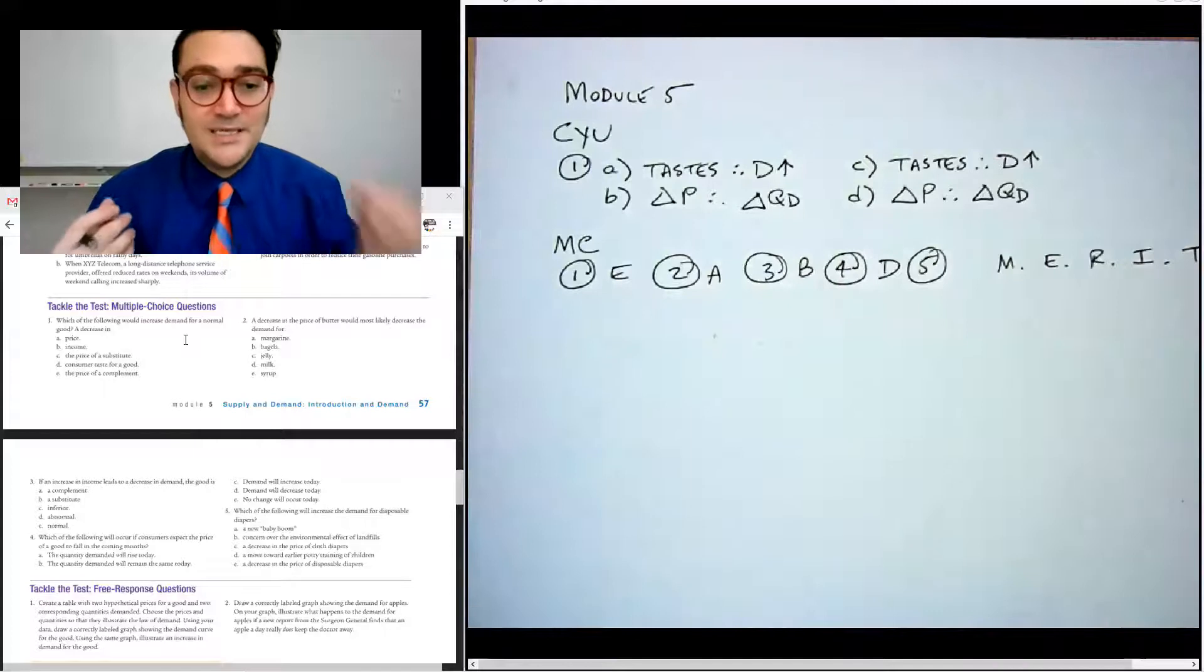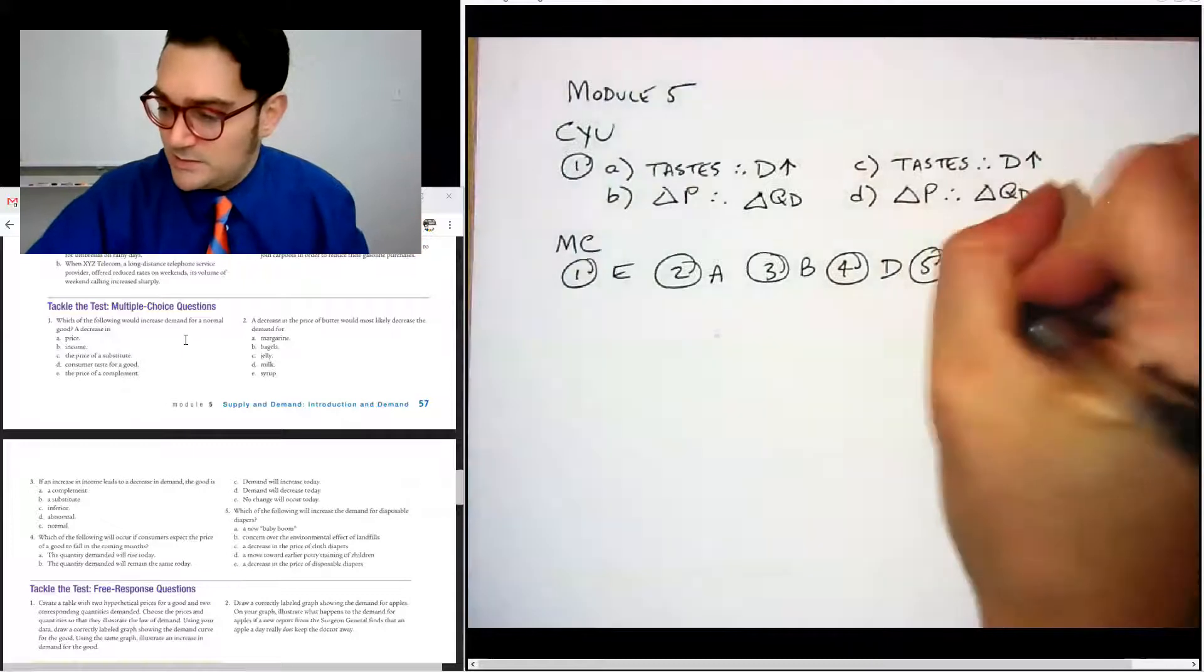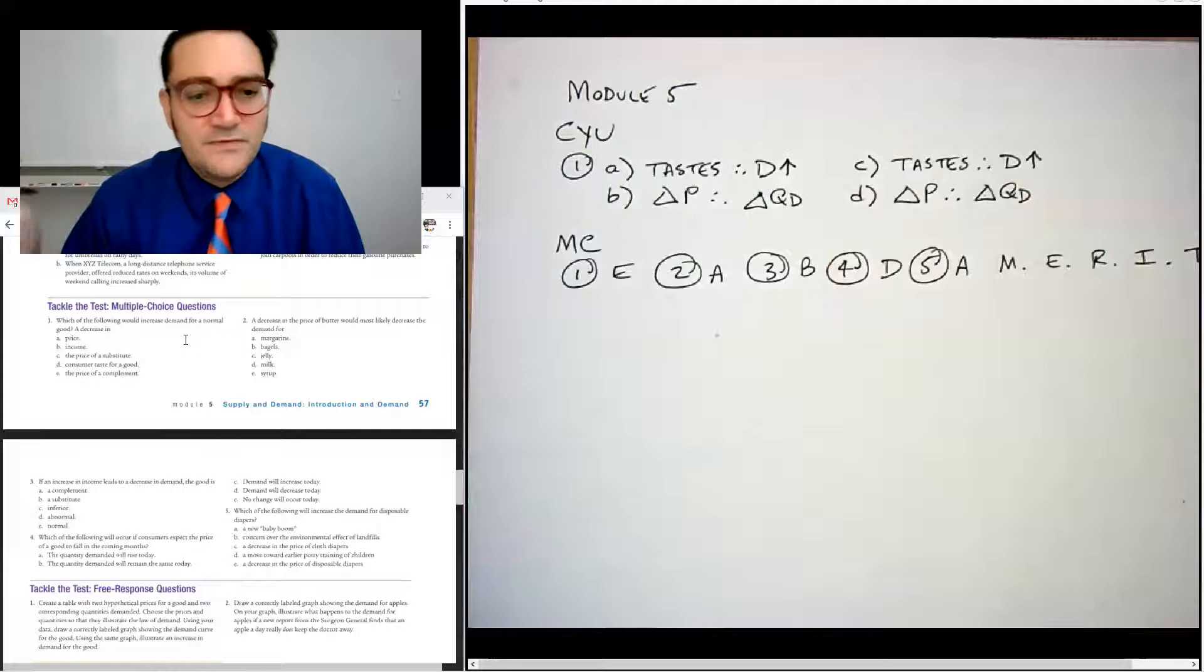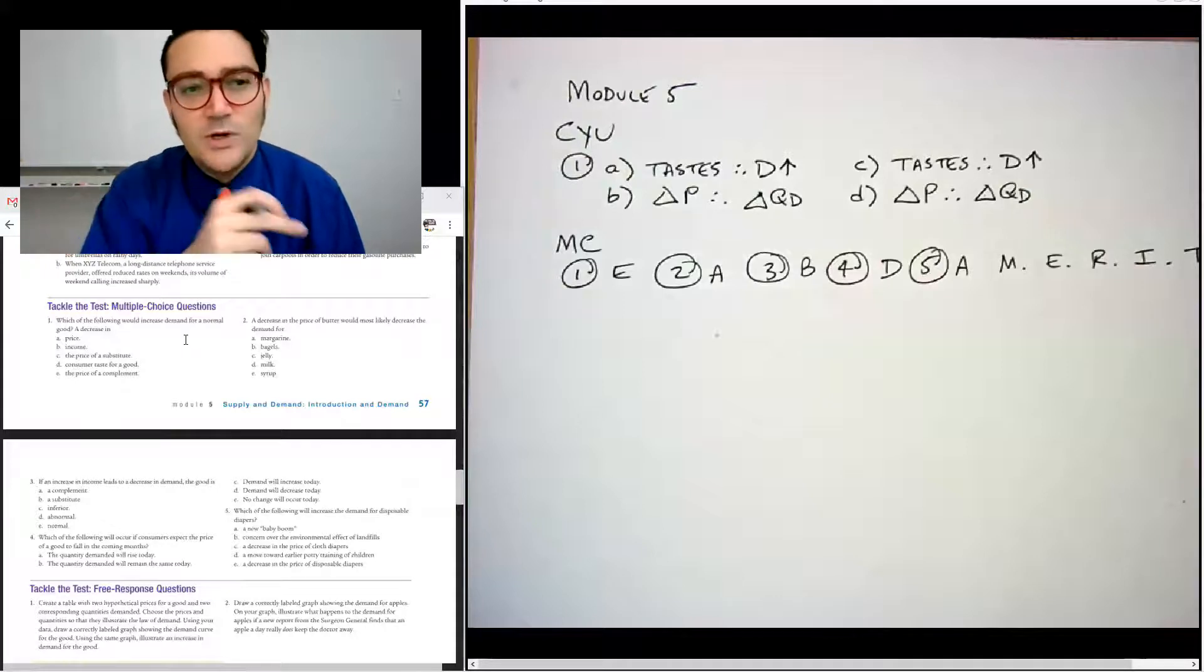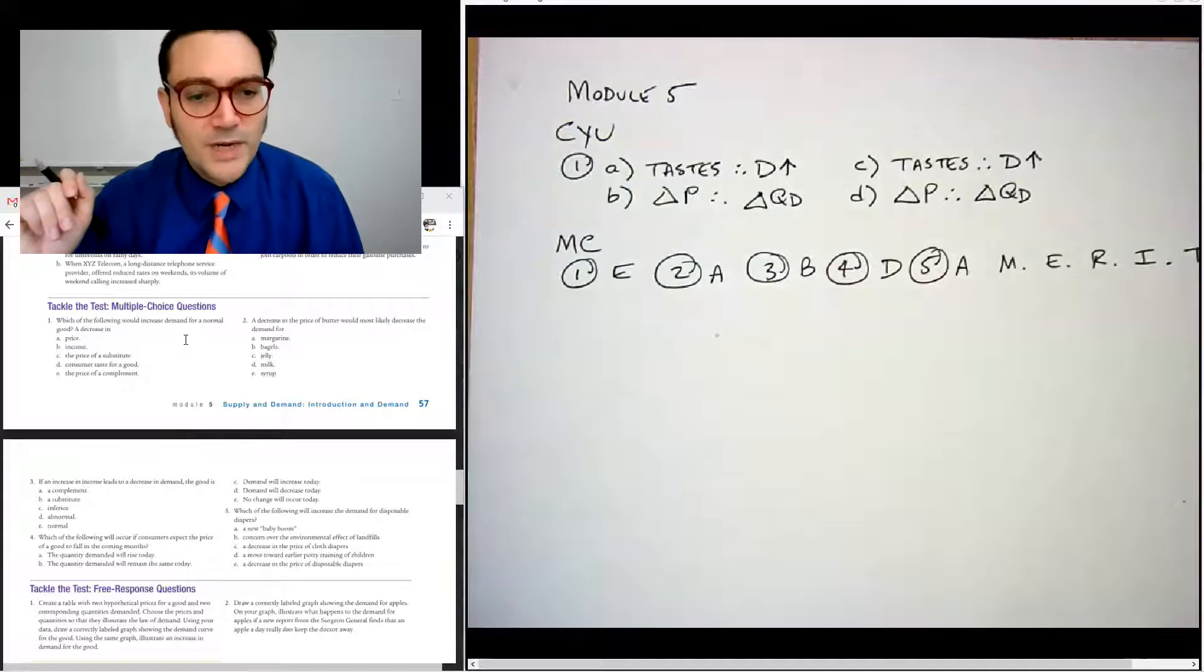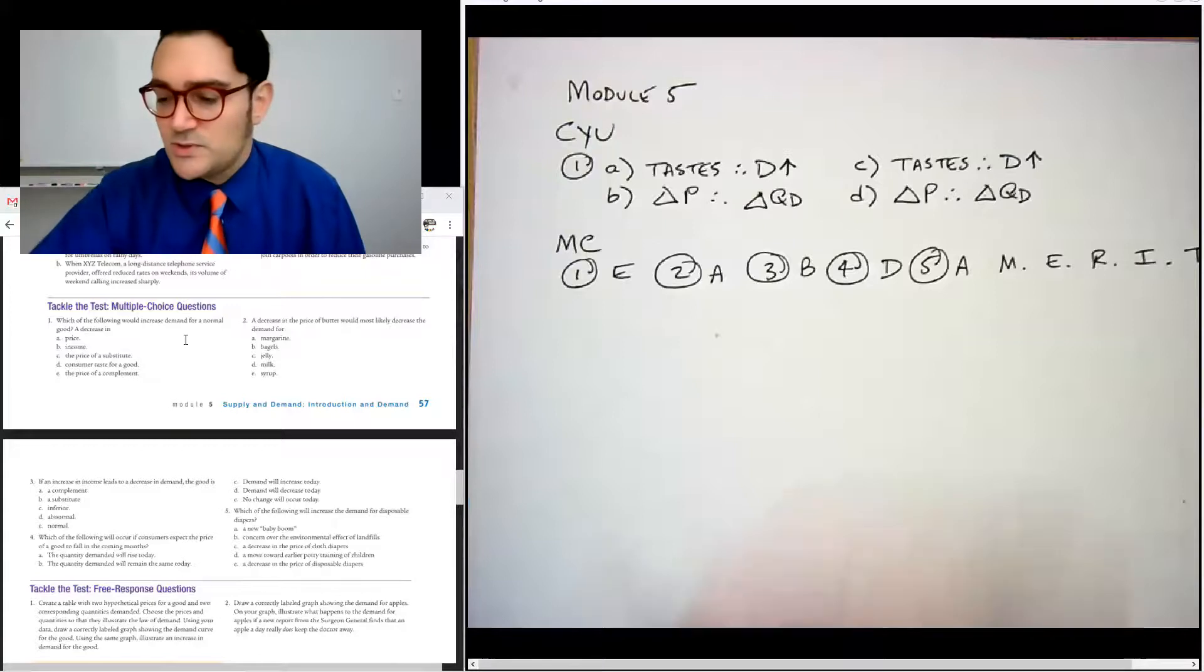Number five, which of the following will increase the demand for disposable diapers? A new baby boom? Sure. If there's more babies, sure. Cause that's like the number of buyers. So concern over the effect, that's tastes and preferences. That would make people not want to buy them. Cloth diapers, a decrease in the price of cloth diapers. If people were buying more cloth diapers, they would buy fewer and shift the demand curve for disposable diapers, decrease it. A move toward early potty training of children. Now that would decrease the demand for diapers. A decrease in the price of disposable diapers. That just moves along the disposable diapers curve.